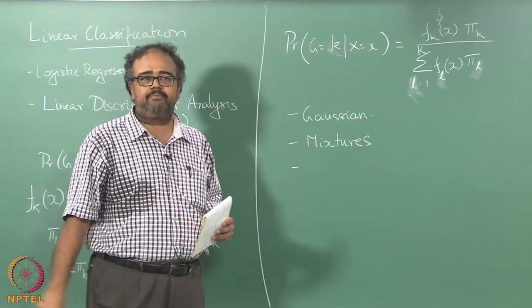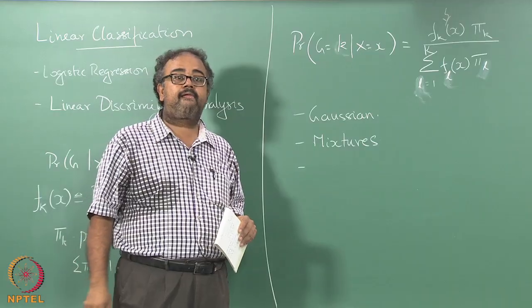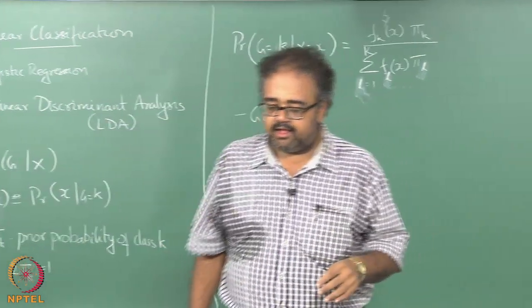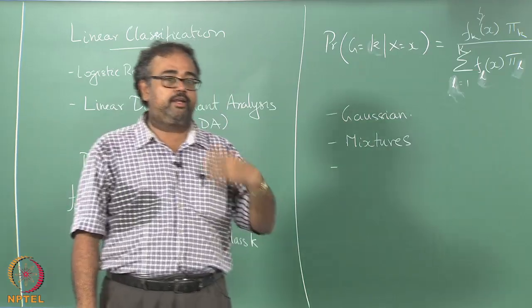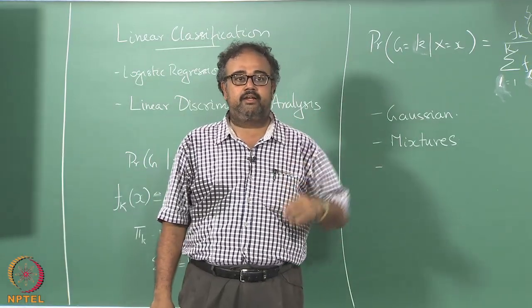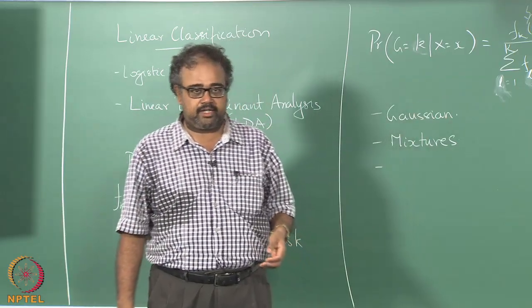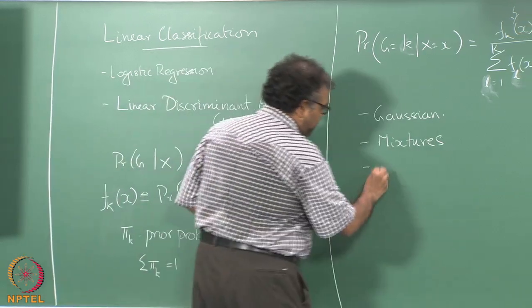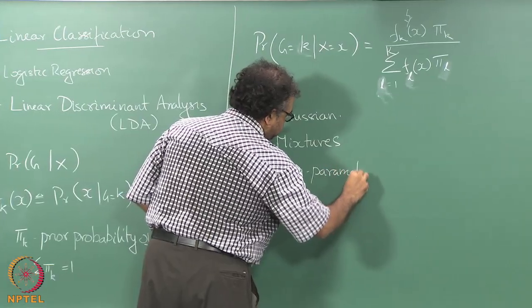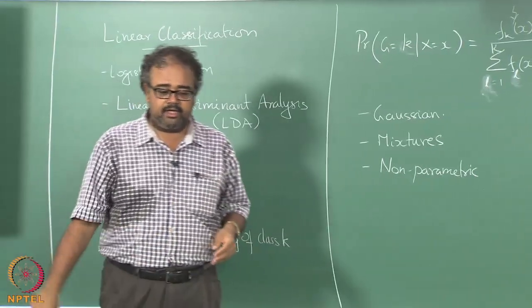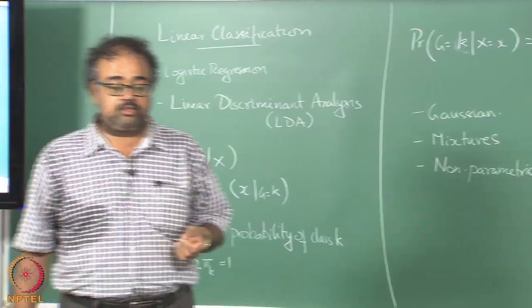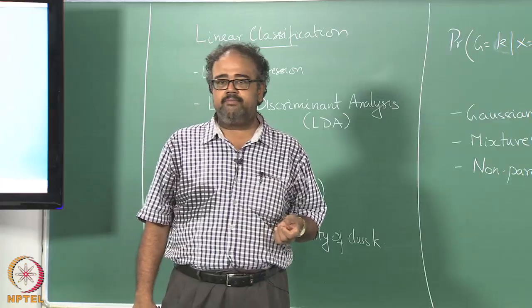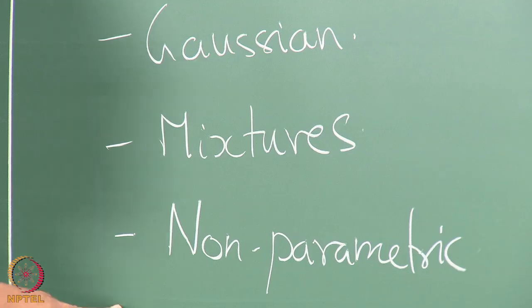Mixtures are fine if we still want to stay in a parametric space. That is a hard problem - usually you take some guess from whatever knowledge you have about the domain, or you can do some preliminary experiments. You can try to run some kind of rough clustering by varying the number of clusters and trying to see whether you can decide on the number of mixture components. Alternatively you could do non-parametric methods.